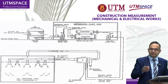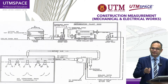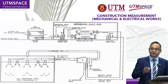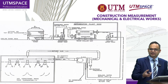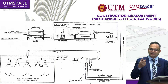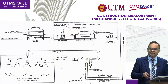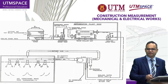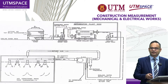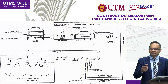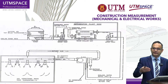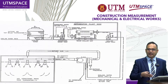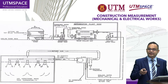Based on the Standard Method of Measurement in Section Q and Section R, we can produce a bill of quantities if we receive proper drawings from the architect and the mechanical and electrical engineering consultant. This is an example of a drawing — you can see here there is a cooling tower, a water chiller unit, and the AHU and ducting system. In Section Q and Section R, we can measure each component and item of the engineering services, specifically the mechanical engineering equipment in building.